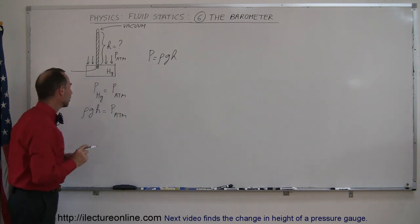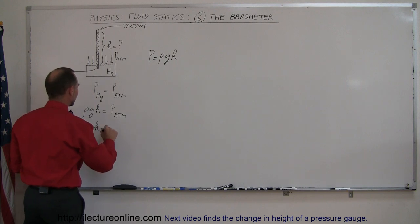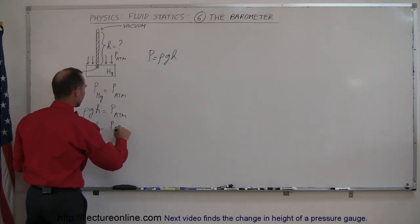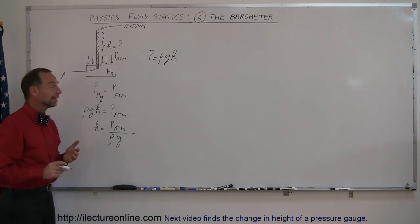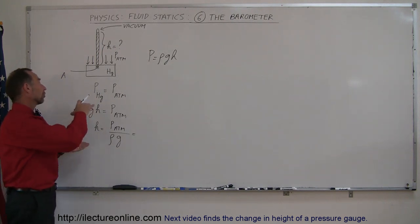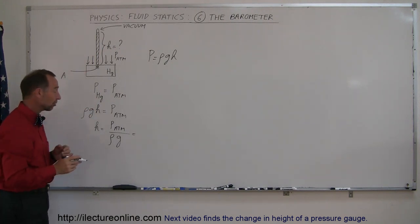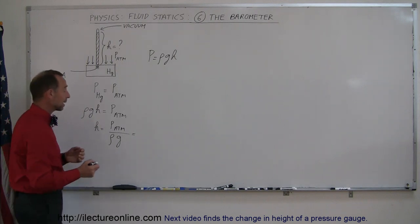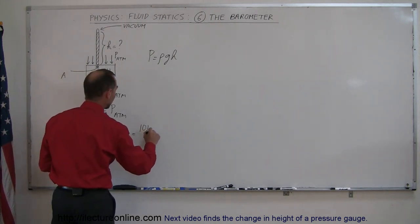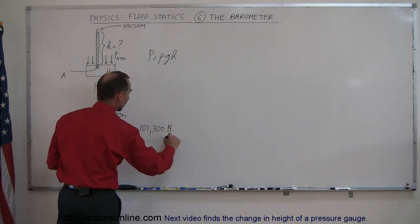And so what that means is we need to find the H for that. And so that means that H is equal to the atmospheric pressure divided by rho times G. And of course, then Torricelli was trying to find the atmospheric pressure. And of course, he measured the height and from that, figured out the atmospheric pressure. What we're going to do is the other way around. We're going to find the height of that mercury column that gives us the measurement for the atmospheric pressure, knowing already that the atmospheric pressure is 101,300 newtons per square meter.